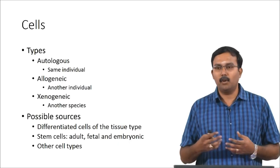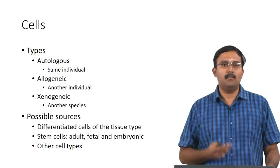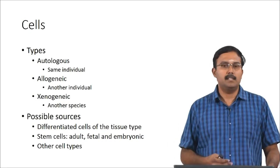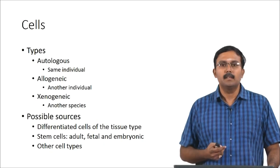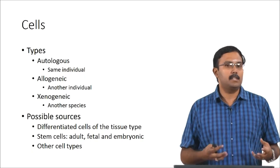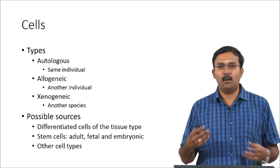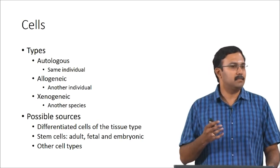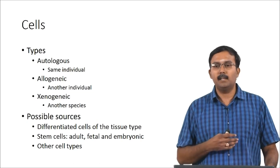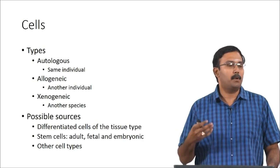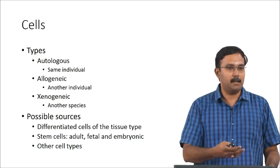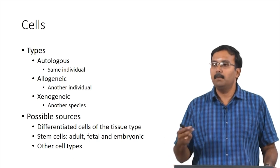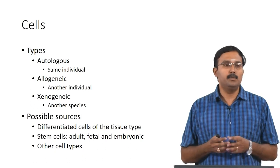Cells are basically of three different types. You have autologous cells, which are cells from the same individual; allogenic cells, which are cells from another individual of the same species; and xenogenic cells, which are cells from another species altogether. There are different sources for these types of cells. You could either have differentiated cells of the tissue type, or you could use stem cells, fetal cells, or embryonic cells. You could also use cells of a different type — for example, when engineering bone, you might use osteoblasts along with endothelial cells.